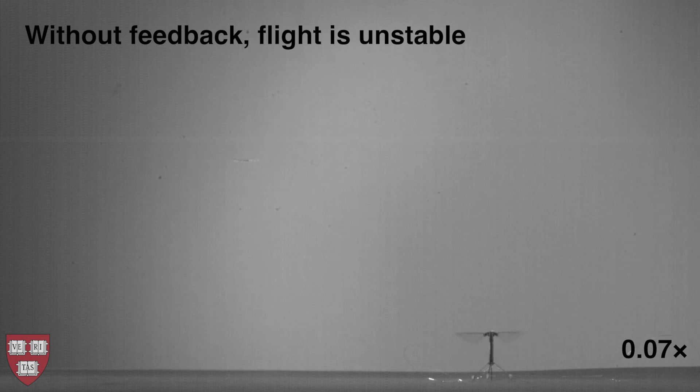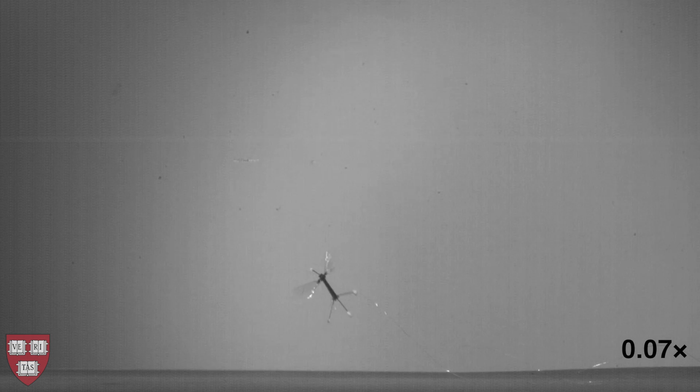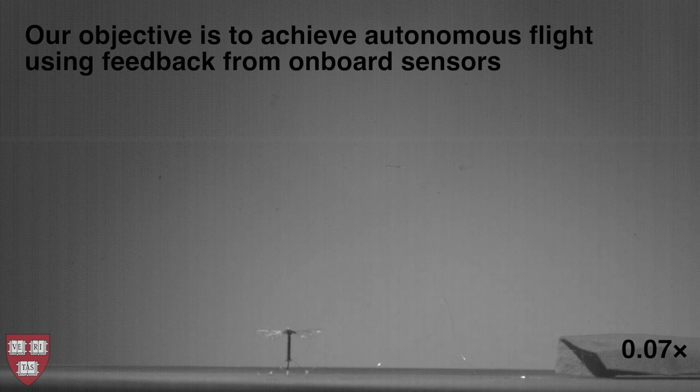Much like a miniature fighter jet, continuous corrective maneuvers are required to maintain stable flight. Previous work has shown that this robot design can be made to fly stably, but the demonstration required external tracking cameras, meaning that the vehicle itself was flying blind.